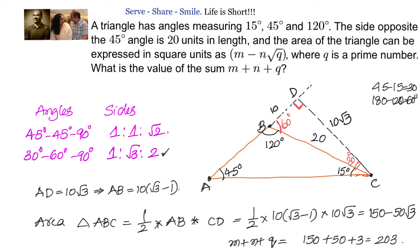What we did was extend the side and consider this as an obtuse triangle with AB as the base and CD as the height. Since we know BC is 20, we can easily find AB and CD and then find the area of the triangle.